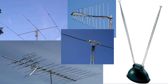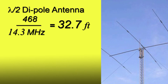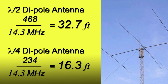Dipole antennas are very popular. Unlike the quarter-wave or monopole antenna, they have a physical second element, and range from a tri-band HF antenna to an outdoor television antenna. To calculate for a dipole, it's again 468 over the frequency in megahertz — in this case 14.3 MHz — giving us a half-wave length of 32.7 feet, or 16.3 feet per leg.